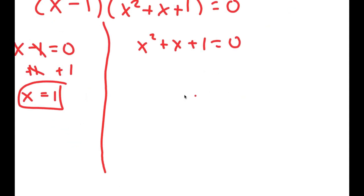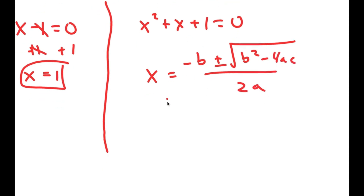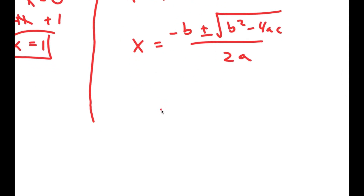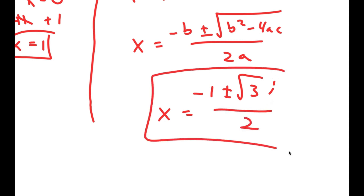For x squared plus x plus 1 equals 0, I can use the quadratic formula. By using it, I get x is equal to negative 1 plus or minus the square root of 3i over 2. So these are two more solutions.